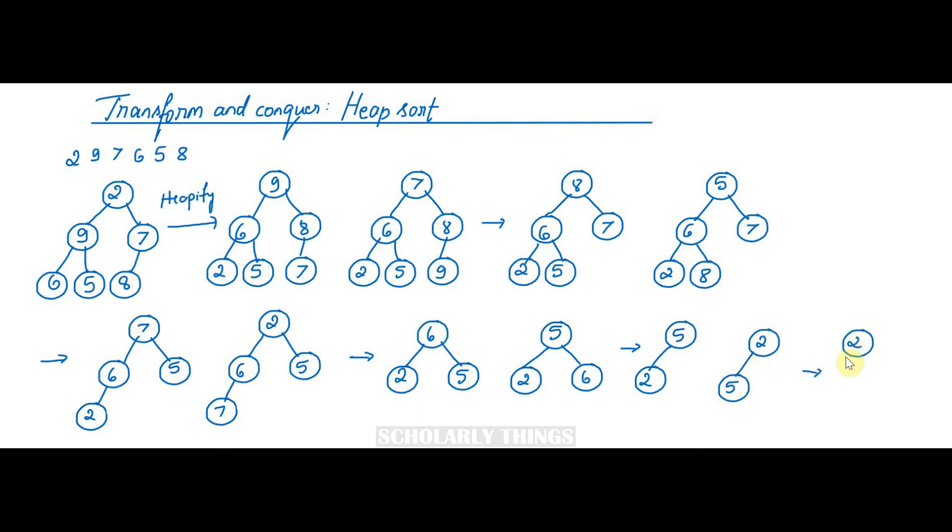Finally we have 2 left, and then delete that also. So to summarize, here the array elements were deleted in decreasing order. First 9 was deleted, and then 8 was deleted, and then 7 was deleted, then 6 was deleted, and then 5 was deleted, and finally 2 was deleted. Now if you see the final result, it has all the nodes that were in the original array. It is arranged or sorted in increasing order using heap sort.